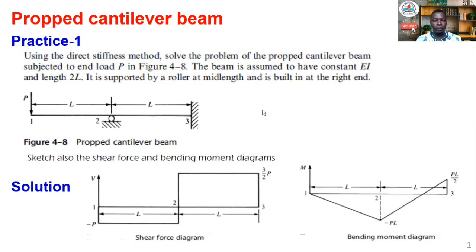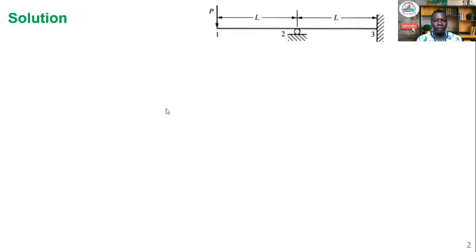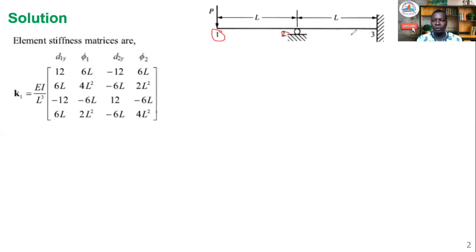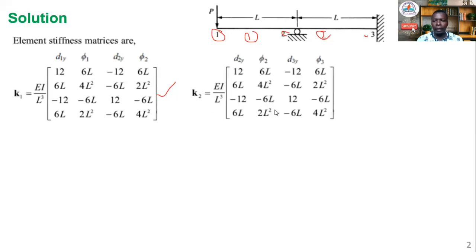The first thing, as always, is to come up with the elemental stiffness matrices. You look at how many elements we have — they are already numbered: node one, node two, node three, giving us element one and element two. They are oriented in the same coordinate system, so there is no issue of transformation. The typical stiffness matrix for a beam element is given here. The check now is to see how you can combine the two elements.